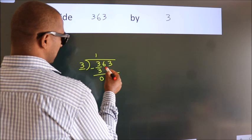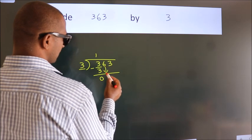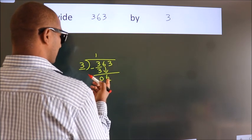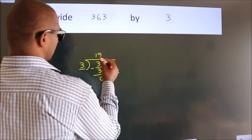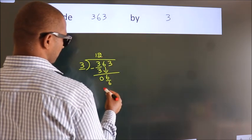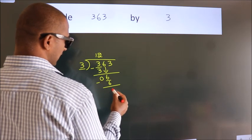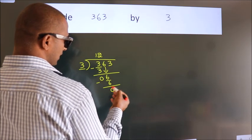After this, bring down the beside number. So 6 down. When do we get 6 in the 3 table? 3 twos is 6. Now we subtract. We get 0.